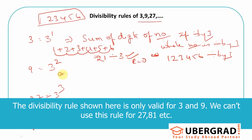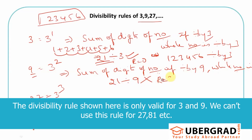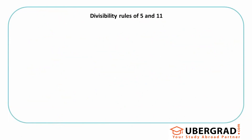Similarly, the rule for 9 (3^2): the sum of digits of the number, if divisible by 9, means the whole number is divisible by 9. The sum of digits was 21. Is 21 divisible by 9? No — the closest multiple is 18, so the remainder is 3. That means the whole number is not divisible by 9.